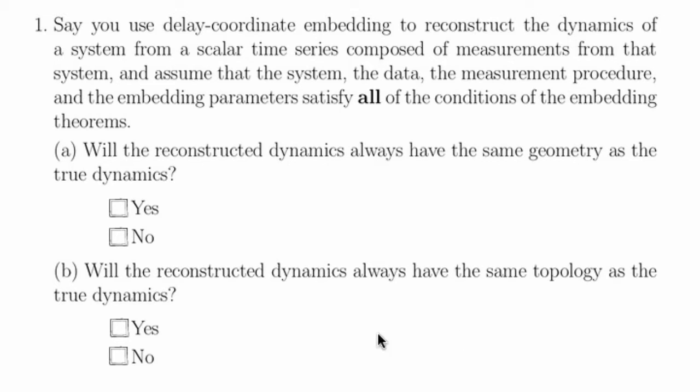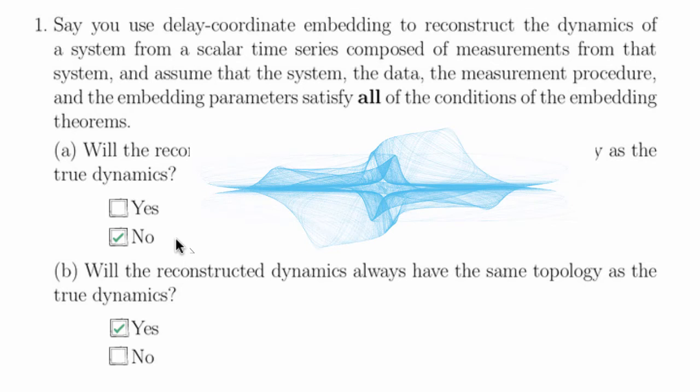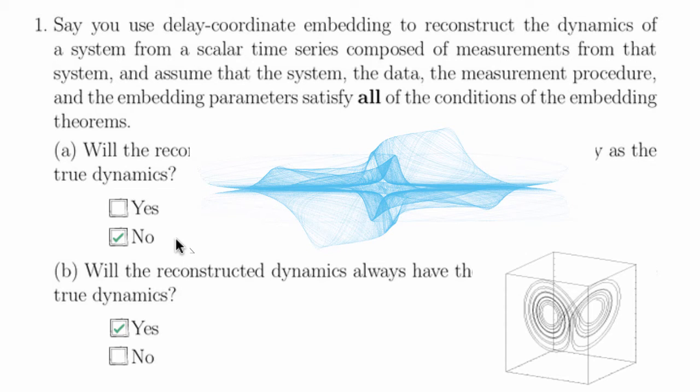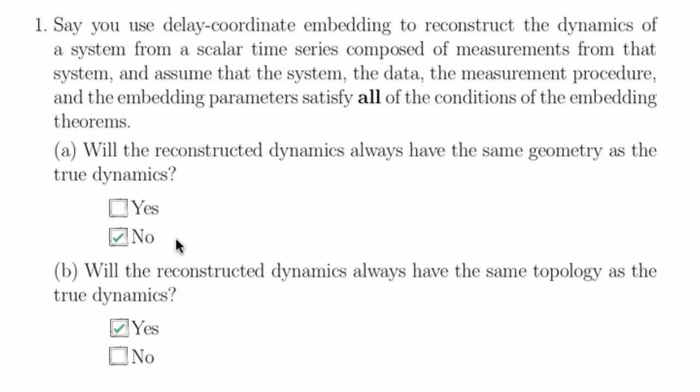We are guaranteed that it has the same topology, so part B is yes, and part A is no. Recall from A.2 that this embedding, for example, had the same topology, but clearly from a visual inspection does not have the same geometry as the Lorenz attractor. The theorems of delay-coordinate embedding only guarantee correctness of topology, not of geometry.